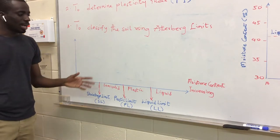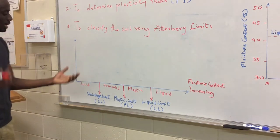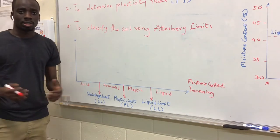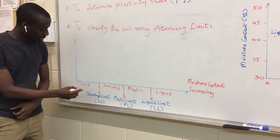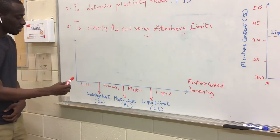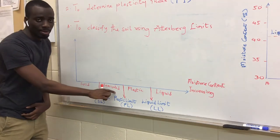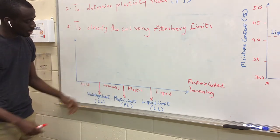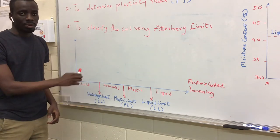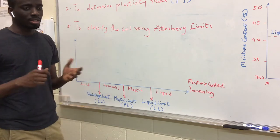To give a background about the Atterberg Limit, let's assume we have a sample of soil in a bowl and then you add water to it. At that state, the sample is solid. So when you add water to it, it becomes semi-solid. Now, the transition from solid to semi-solid is the shrinkage limit. However, we are not going to treat shrinkage limit in today's lab.